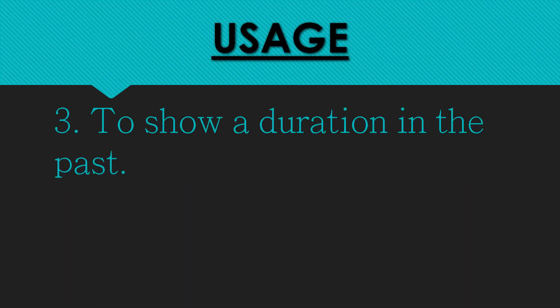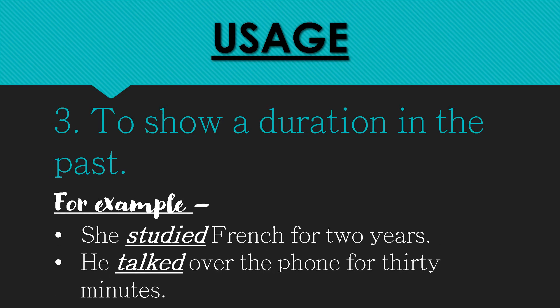Another condition where simple past tense is used is to show a duration in the past — these words show the duration of an action that took place in the past. Let's make it clear with examples: 'She studied French for two years.' Here, 'for two years' tells you the duration of studying French. 'He talked over the phone for 30 minutes.'